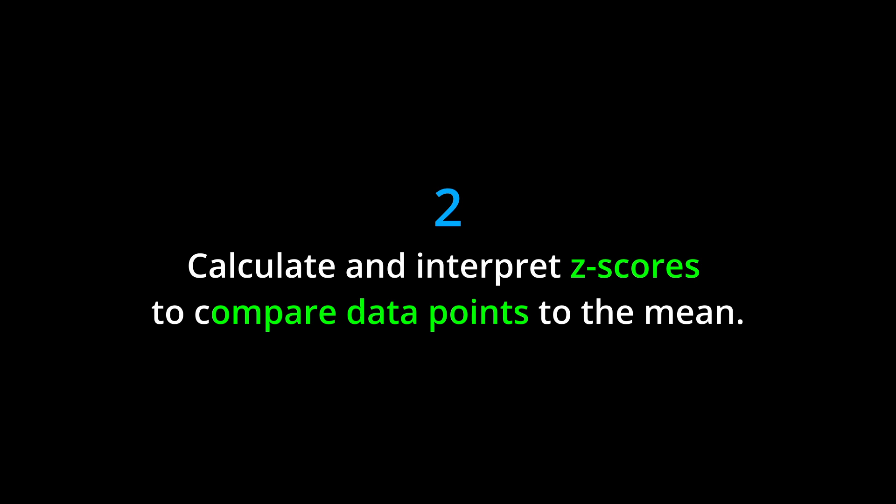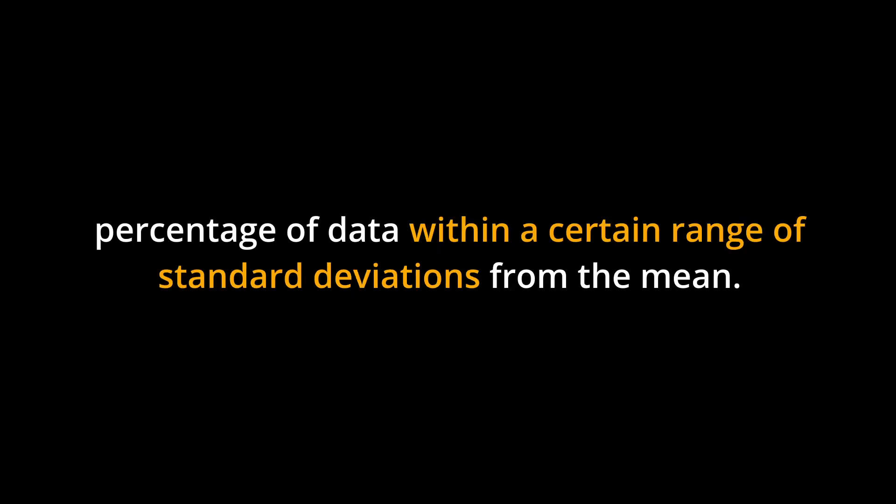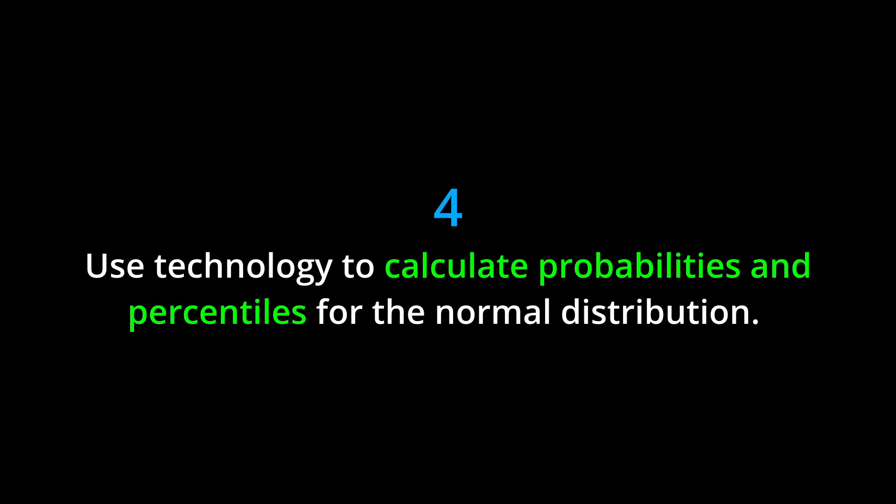2. Calculate and interpret z-scores to compare data points to the mean. 3. Apply the empirical rule to estimate the percentage of data within a certain range of standard deviations from the mean. 4. Use technology to calculate probabilities and percentiles for the normal distribution.